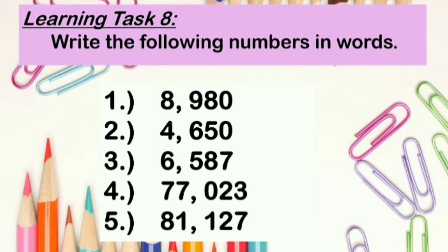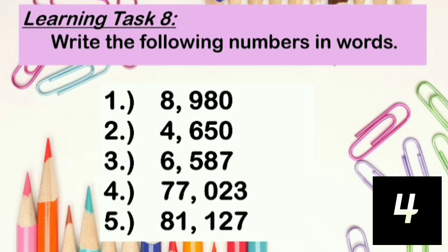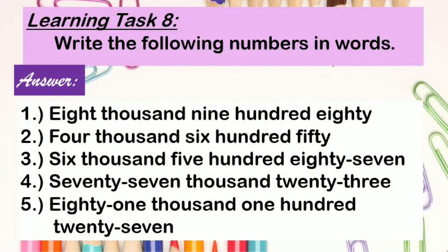After writing in symbols, this time, write the following numbers in words. Check if your answer is correct. Number 1, 8,980. Number 2, 4,650. Number 3, 6,587. Number 4, 77,023. And number 5, 81,127.